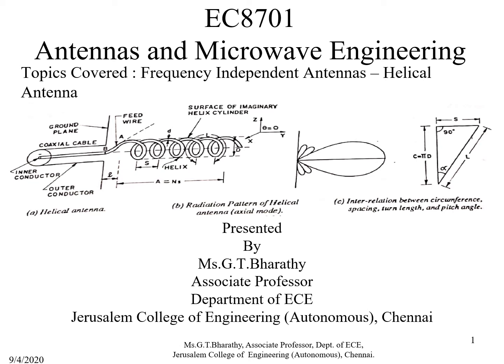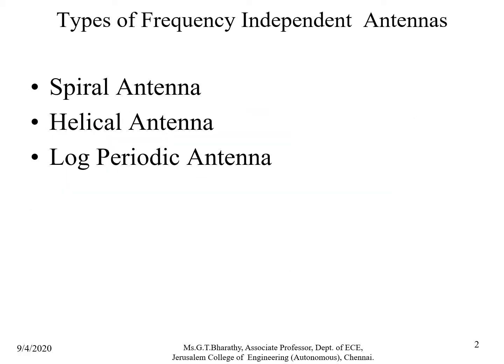Good morning students. In today's class, we will see another example of a frequency-independent antenna, namely the helical antenna. We have seen that there are three major categories of frequency-independent antennas: spiral antenna, helical antenna, and log periodic antenna. We have already covered log periodic antenna and will now proceed with helical antenna in this class.